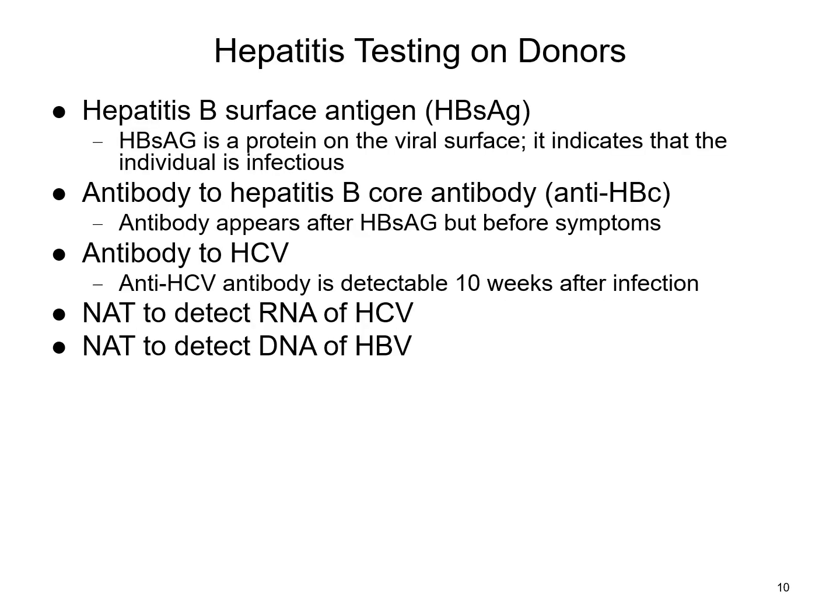For hepatitis testing, we're looking for hepatitis B surface antigen as well as antibody to hepatitis B core antigen. We're also looking for antibody to hepatitis C virus, and we perform NAT testing to detect RNA for hepatitis C virus as well as DNA for hepatitis B virus.